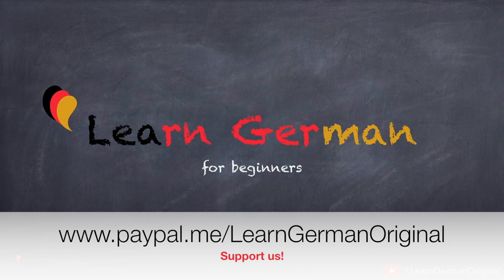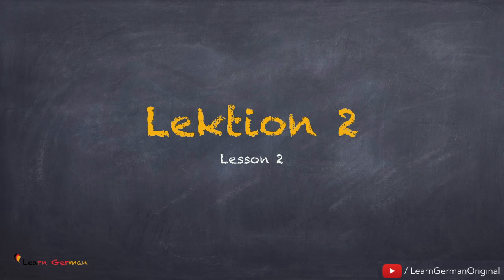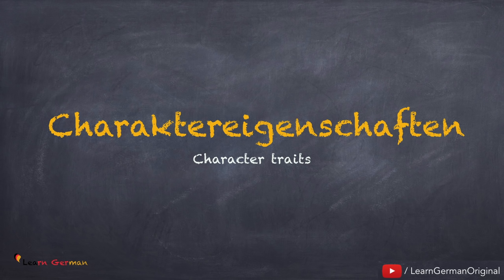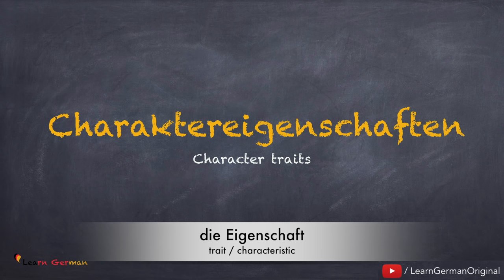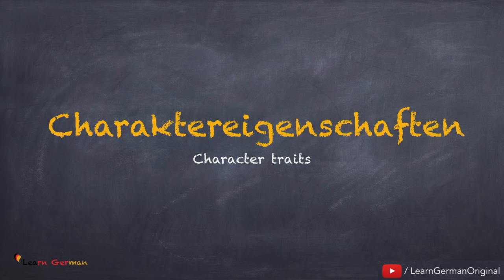Hello everyone and welcome to our video series on Learn German for Beginners. In this chapter we continue with Art 2. In this lesson you'll be learning how to talk about the character traits of a person in German. So let's begin. Lektion 2: Charaktereigenschaften. We are learning a few adjectives for people — these adjectives are properties of a person. Wir wiederholen sie und dann bilden wir Sätze.